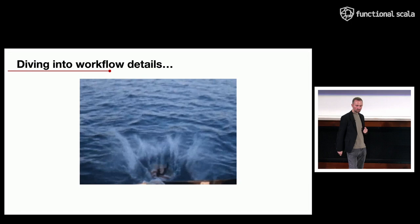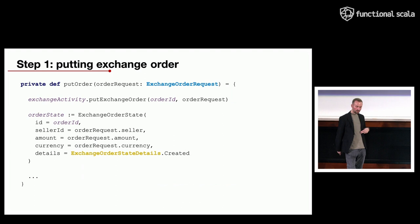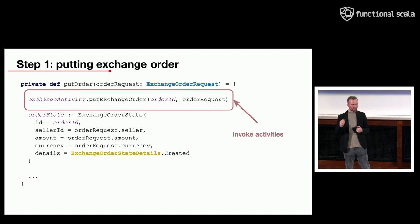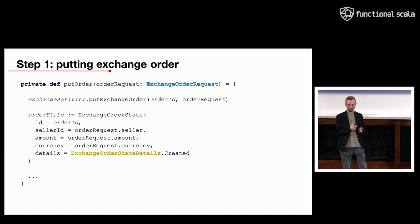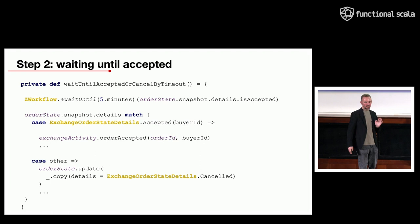Let's dive a bit deeper into the workflow implementation. The first step of our business logic is putting the exchange order into our system and showing it to other customers. It consists of invoking the activity method and then, after it succeeds, changing the exchange order state so that it becomes the 'created' stage. The second part is the interesting one.